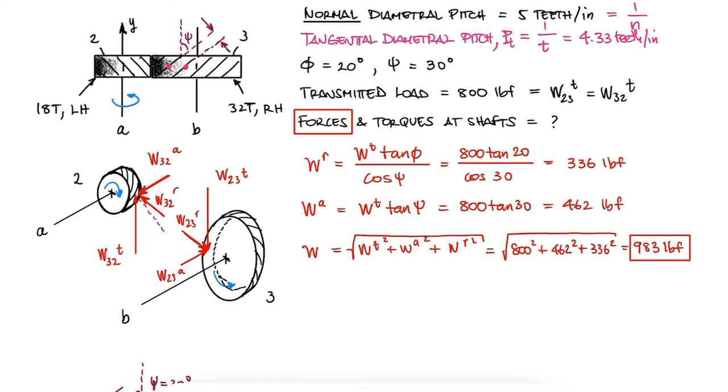The torque of shaft A would be the radius of gear 2 multiplied by the tangential component, and the torque at shaft B would be equal to the radius of gear 3 times the tangential component.